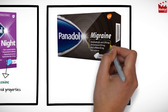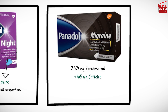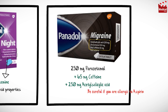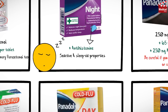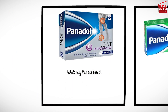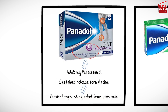Panadol Migraine contains 250 mg paracetamol, 65 mg caffeine, and 250 mg acetylsalicylic acid — known as aspirin — which is a non-steroidal anti-inflammatory drug. Be careful if you are allergic to aspirin or any other NSAID. Panadol Joint contains 665 mg paracetamol in a sustained release formulation, providing long-lasting relief from joint pain such as that associated with osteoarthritis. It contains a higher dose of paracetamol than regular Panadol and may provide up to 8-hour relief from pain.